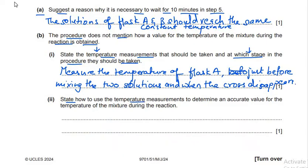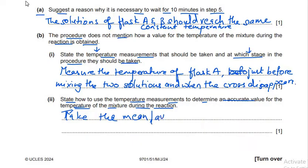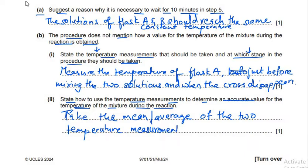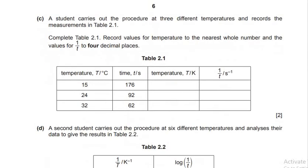The next part asks how to use the temperature measurements to determine an accurate value for the temperature of the mixture during the reaction. If we have measured two temperatures — initial and final — we take the mean, or average, of the two temperature measurements. That is how we get the accurate value of the temperature to use in further calculations.